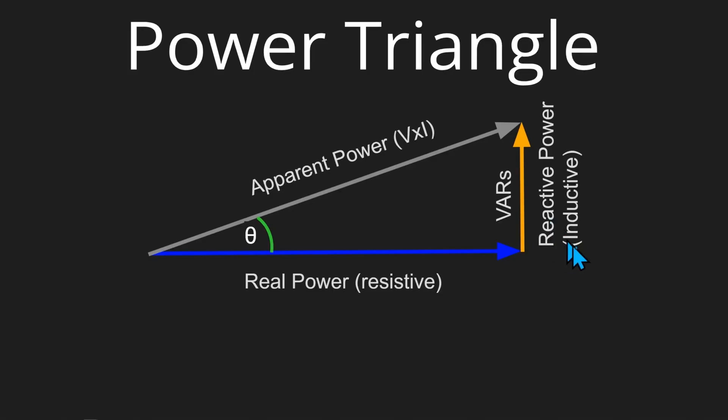Or reactive volt amperes, abbreviated as VARs, which is wasted energy sloshing back and forth in the inductor's magnetic field. The hypotenuse is apparent power. This is what your power supply thinks you're using because it is equal to the supply voltage times the current.